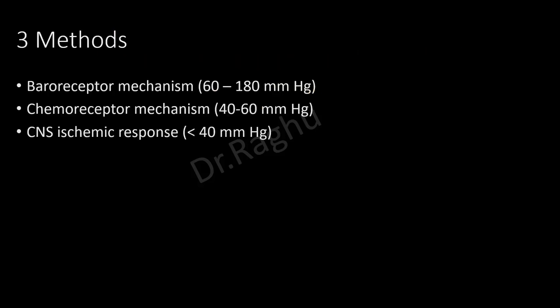Short-term regulation of blood pressure is done by three important mechanisms. First is the baroreceptor mechanism, which functions best when the mean arterial blood pressure fluctuates between 60 to 180 mmHg. The chemoreceptor mechanism operates best between 40 to 60 mmHg. The third is the CNS ischemic response, which operates when mean arterial blood pressure falls below 40 mmHg.